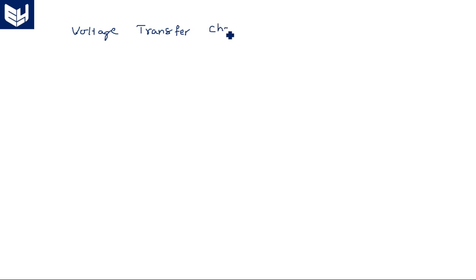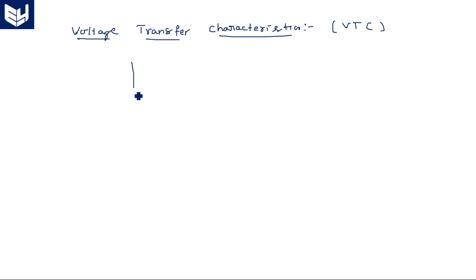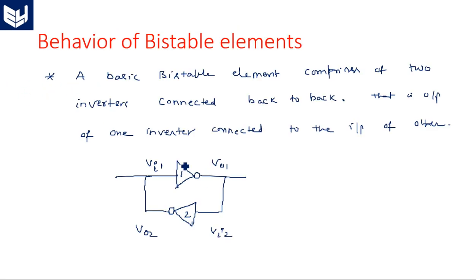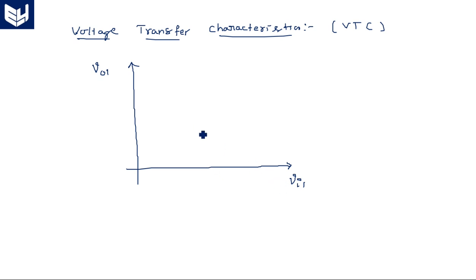Now let us see the voltage transfer characteristics (VTC) of this bistable element. In the VTC, both axes refer to voltages — input voltage on the x-axis and output voltage on the y-axis. For the first inverter, the input is VI1 and the output is VO1.